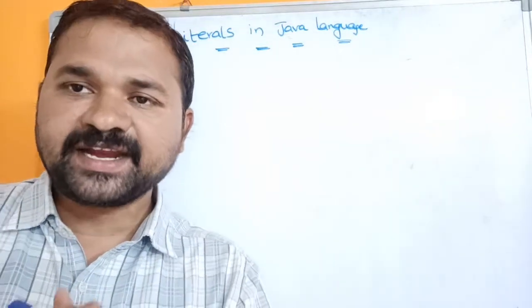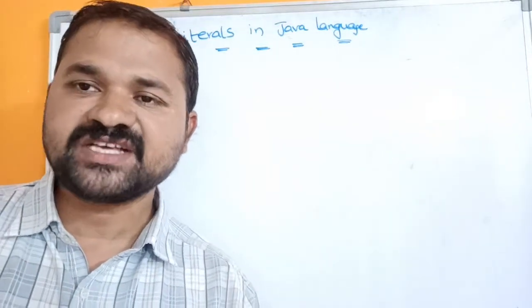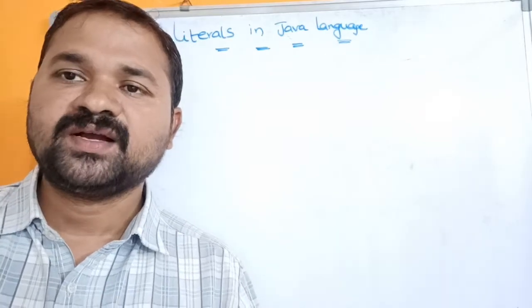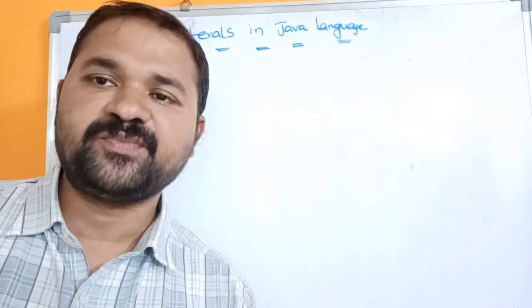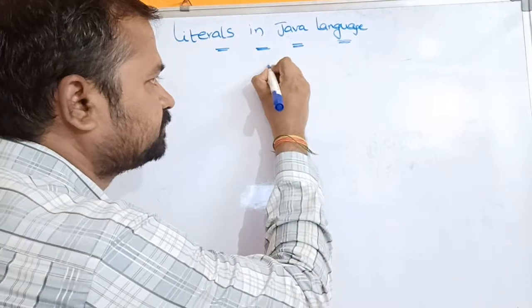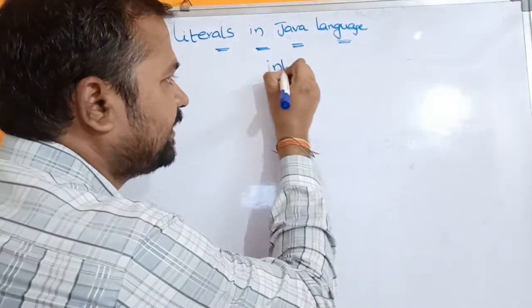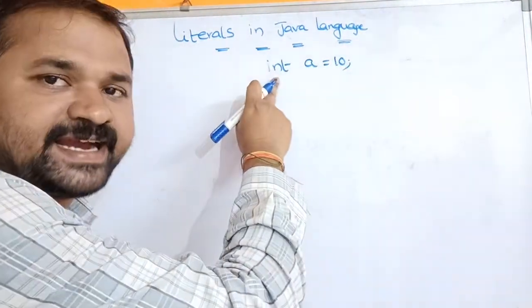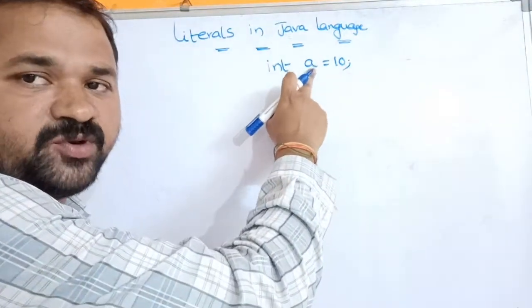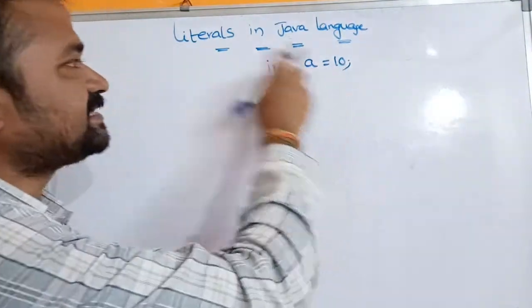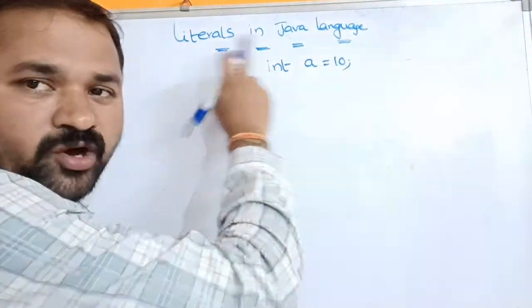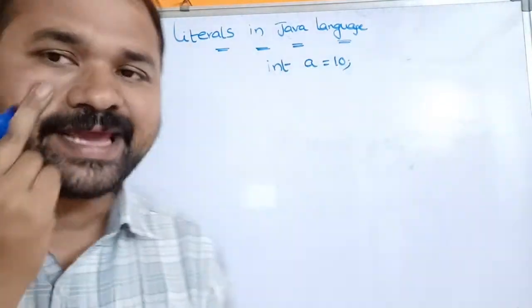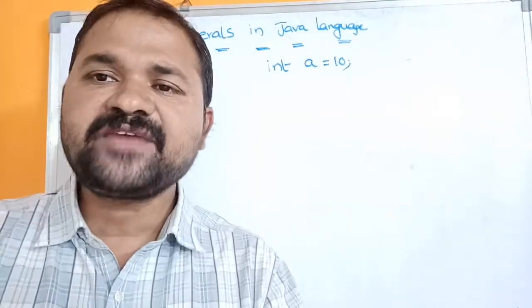In Java language, a literal means a constant value which is assigned to a variable. For example, in 'int a = 10', int means a data type, a means a variable, whereas 10 means a literal or constant value which is assigned to the variable a.